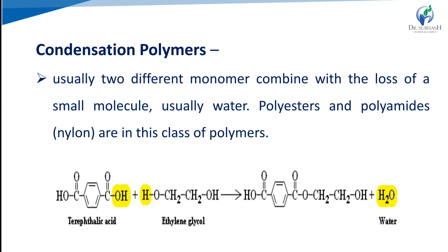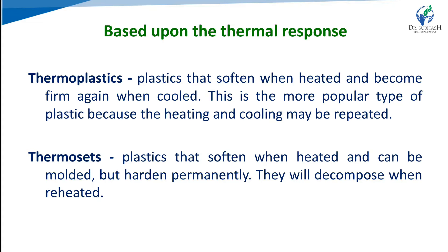In condensation polymerization, unlike addition polymerization, when two different monomers combine and link with each other, they lose small molecules — usually water. Examples of condensation-based polymers include polyesters and polyamides.